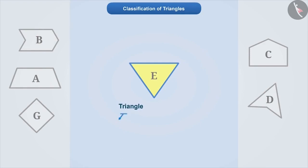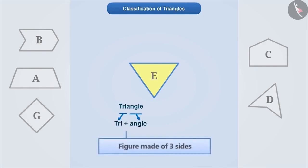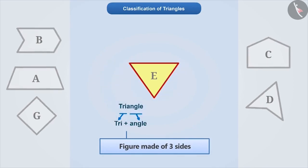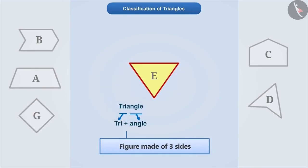Triangle is made of 'tri' plus 'angle', which means a figure that is made of three sides. Therefore, we can say that a figure that is made up of three sides is called a triangle. In the given figures, only E is made up of three sides. Therefore, only this is a triangle.